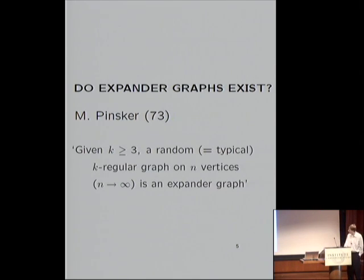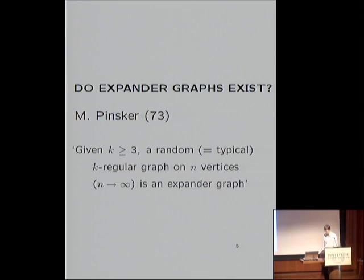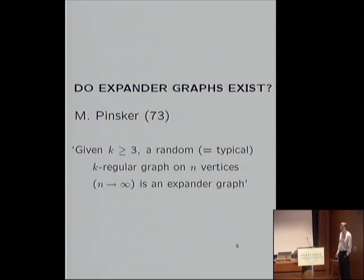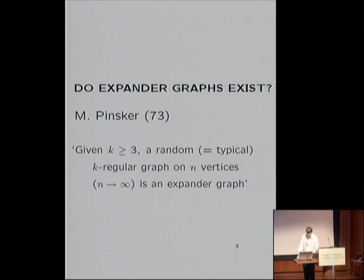It's certainly not intuitively clear that such expanding families exist. There is work of Pinsker in '73 which shows that this is generically the case: if we fix K at least equal to 3 and take a random K-regular graph on N vertices with N going to infinity, then you will have this expansion phenomenon. I was told by Peter Sarnak, who got the message from Misha Gromov, that this phenomenon was already known to Kolmogorov — there is a paper around '67 by Kolmogorov and Barzdin pointing toward this phenomenon.